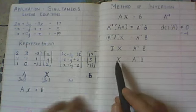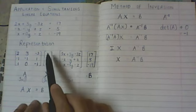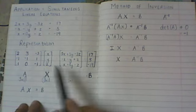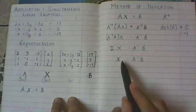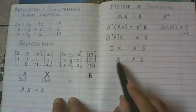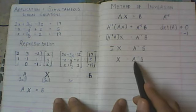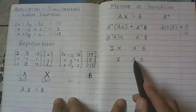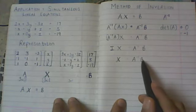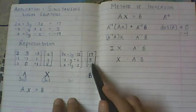And remember what X was? X was our variable matrix. It consisted of these variables x, y, z. So we have actually solved for our variable matrix. The variable matrix is nothing but the inverse matrix of your coefficient matrix multiplied by this B matrix or the RHS values.